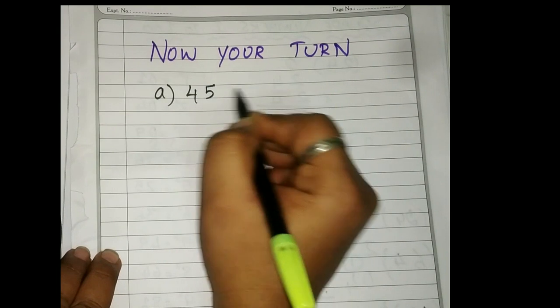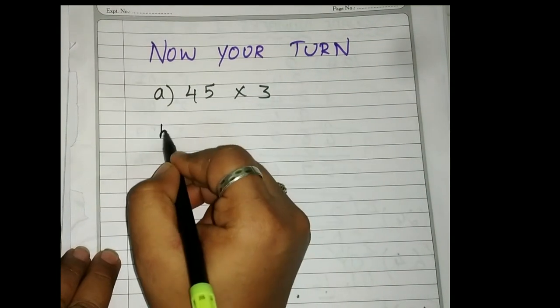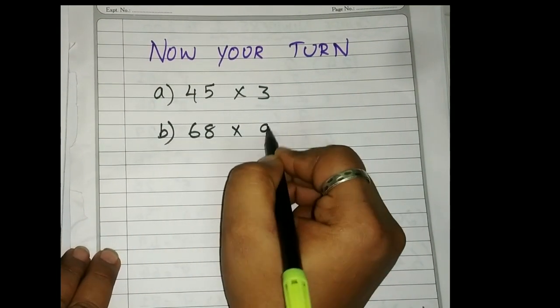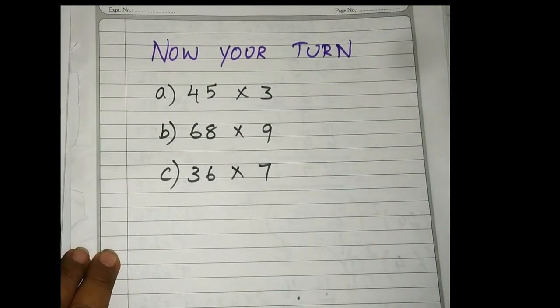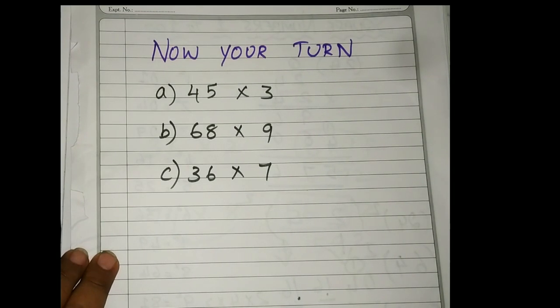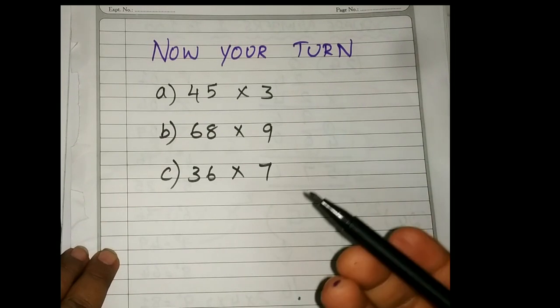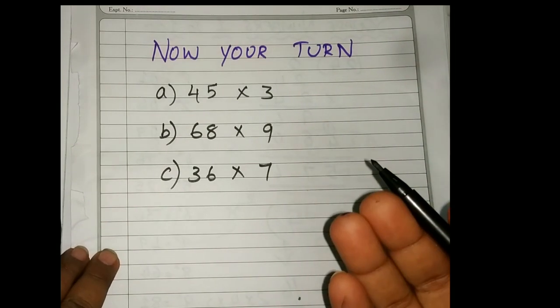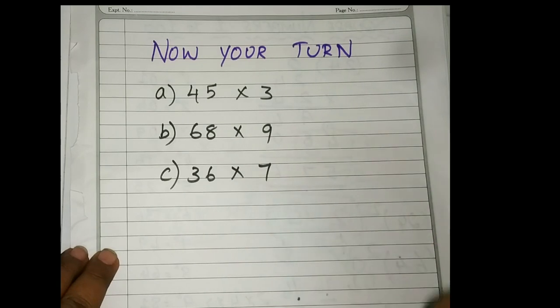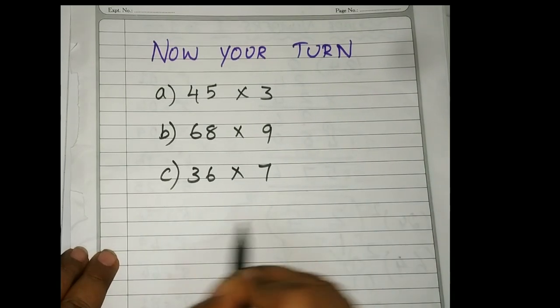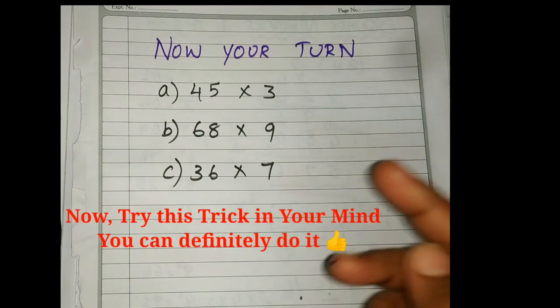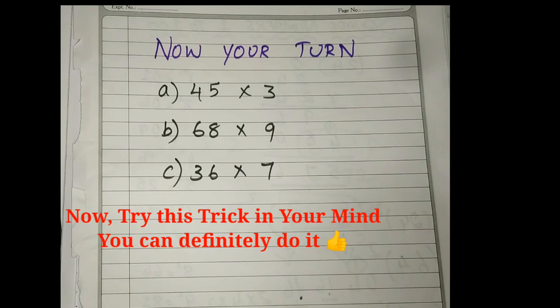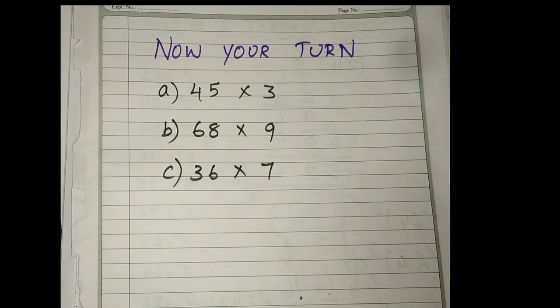A: 45 times 3. B: 68 times 9. And C: 36 times 7. Write the answer in the comment session and without fail include the timings. Within how many seconds, or it is okay if it is a minute, within how many minutes you are completing the sum using your mental calculation, not in writing part. So practice. On the 10th day again you try this. Tell me within how many seconds you solve this sum. I think really this will be helpful for you, children. Thank you, thanks for watching.